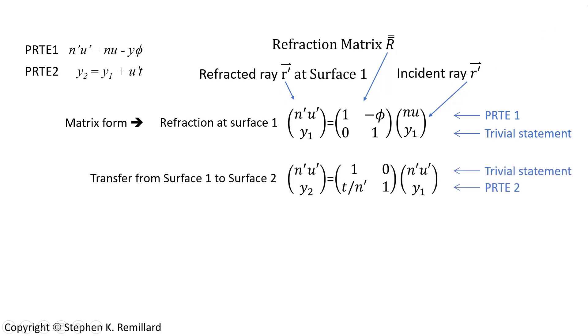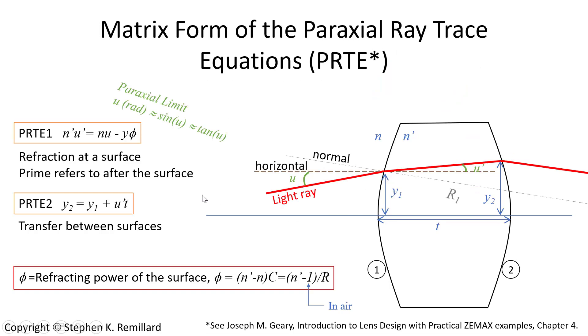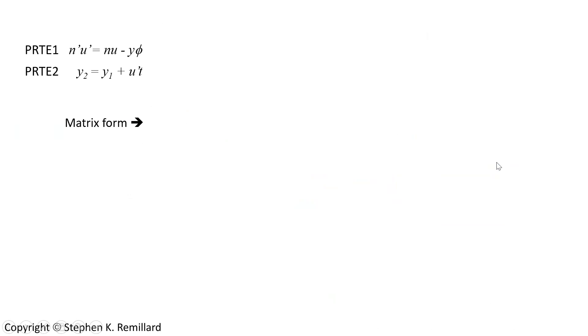Transfer of the ray from surface one to surface two is also then put in a two by two matrix equation. Ray vector, which is the optical angle on top, and the height of the ray on the bottom. y1 is the height of the ray when it begins the transfer, and y2 is the height of the ray when it finishes the transfer.